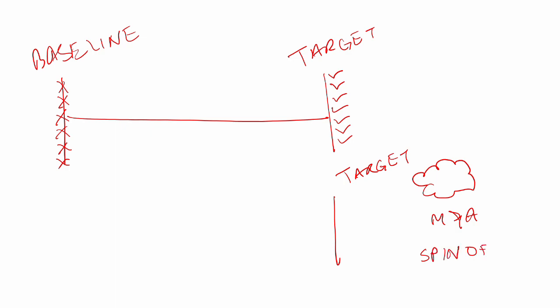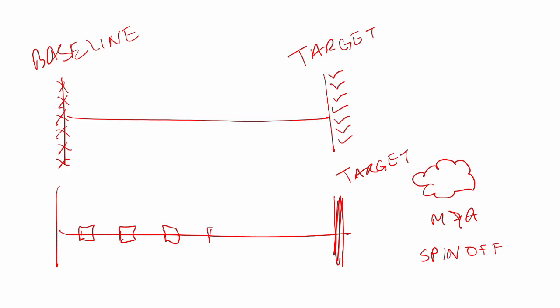The spin-off becomes a target. Moving to the public cloud becomes a target. Modernizing the tech stack becomes a target. We know the target architecture, and then we do the baseline architecture so that we know what changes we need to make to achieve the target. So you've got two concepts: baseline first architecture, where you go through a discovery process and then define the target; and target first architecture, where you define the target state first and then define the baseline architecture.